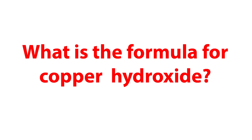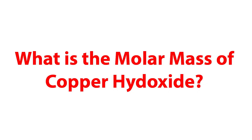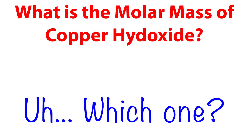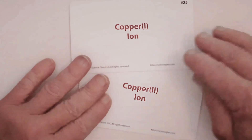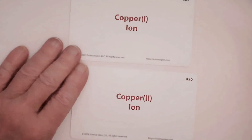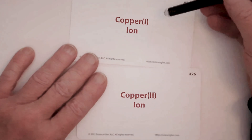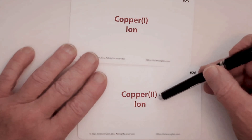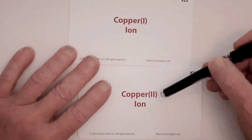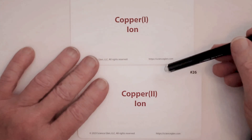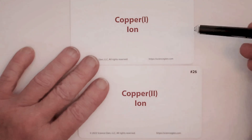So what do you think the formula is for copper hydroxide? Did you ask which one? Because in fact, there's two of them. Let's look at the flashcards. There's a copper 1 hydroxide and there's a copper 2. These are called type 2 cations, when there's more than one different charge.